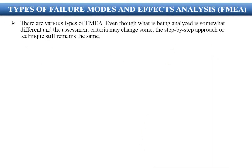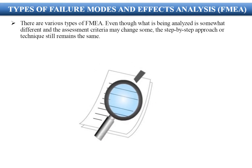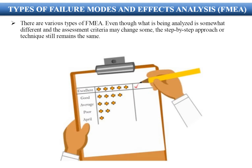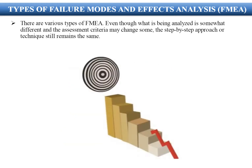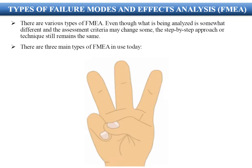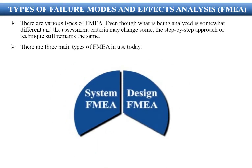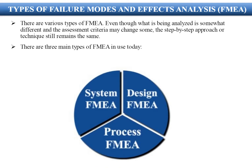There are various types of FMEA. Even though what is being analyzed is somewhat different and the assessment criteria may change, the step-by-step approach or technique still remains the same. There are three main types of FMEA in use today: System FMEA, Design FMEA, and Process FMEA.